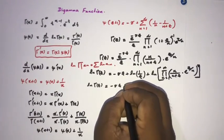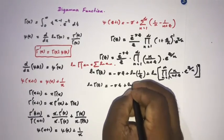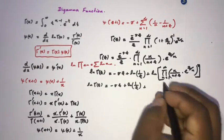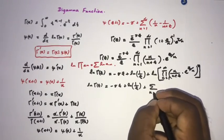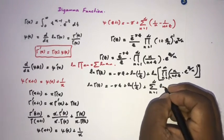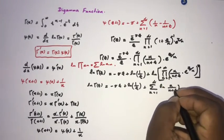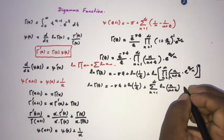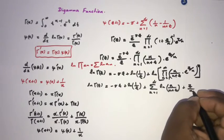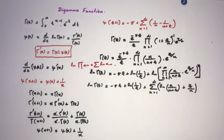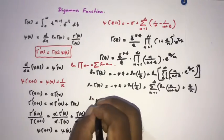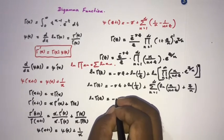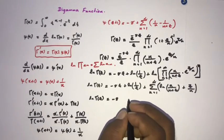Using the property that the natural log of a product equals the sum of natural logs: ln Γ(c) = −γc + ln(1/c) + sum from n=1 to infinity of [ln(n/(n+c)) + c/n].